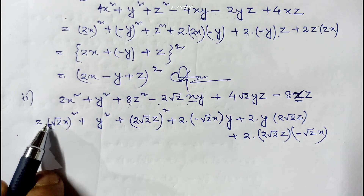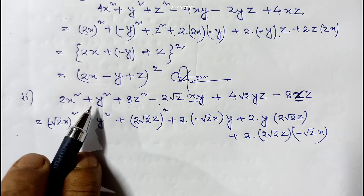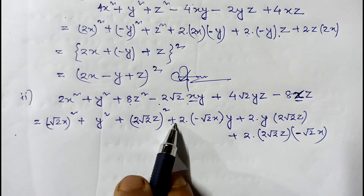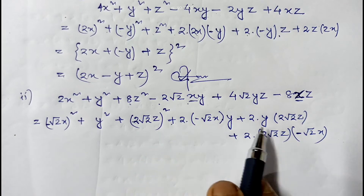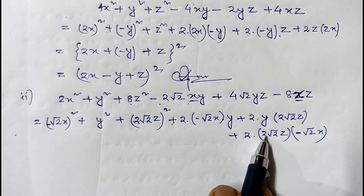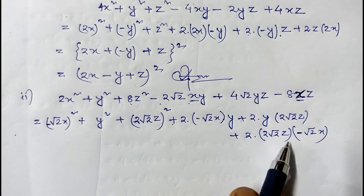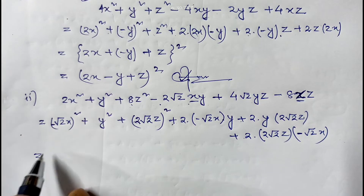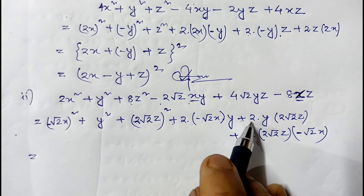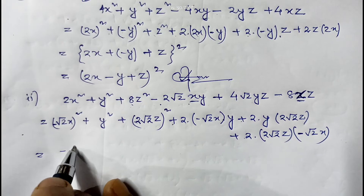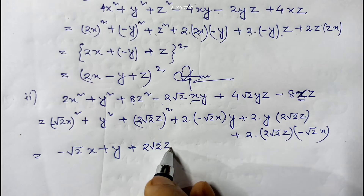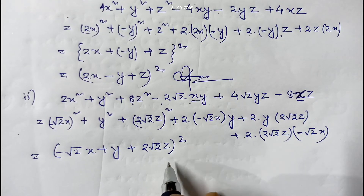Checking: (−√2·x)² = 2x², y² stays, (2√2·z)² = 8z², and the cross terms give −2√2·xy + 4√2·yz − 8xz — which matches the original. Applying the identity x² + y² + z² + 2xy + 2yz + 2zx = (x+y+z)², the answer is (−√2·x + y + 2√2·z)², which is the required answer.